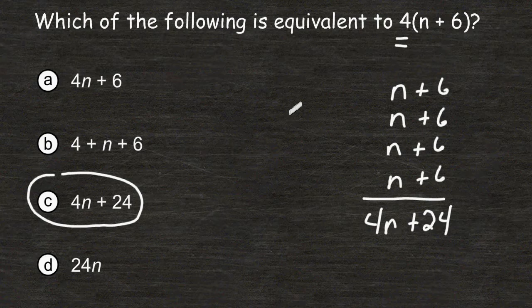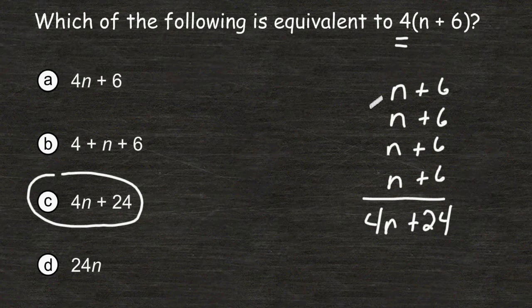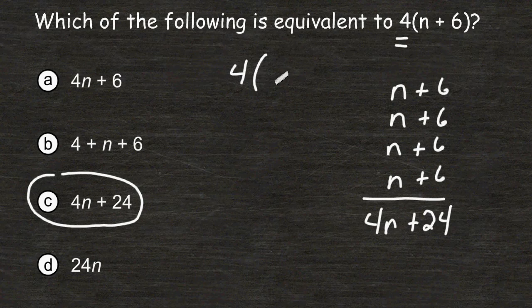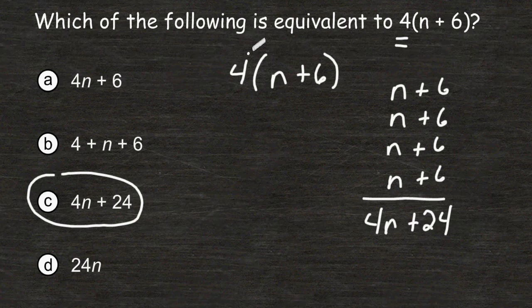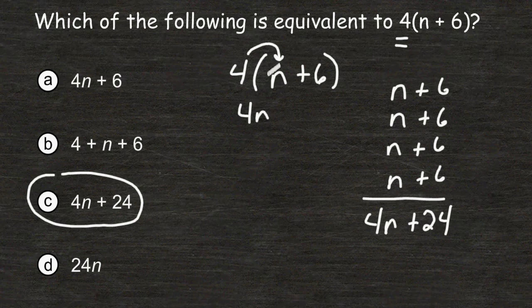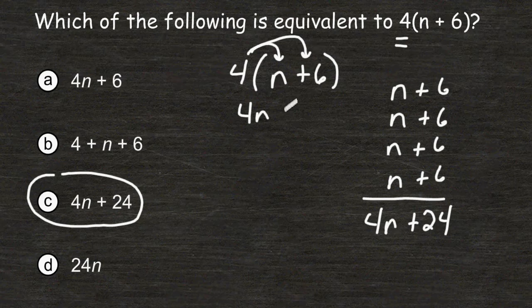Now another way that we could have solved this without writing n plus 6 a total of 4 times is to use the distributive property. This says that we can take the factor located on the outside of parentheses and multiply that factor by each term located inside the parentheses. So 4 times n is 4n, and 4 times 6 is 24.